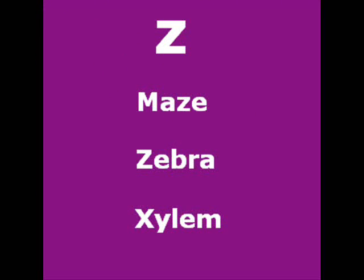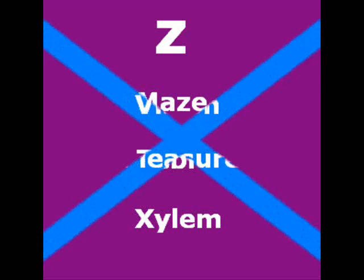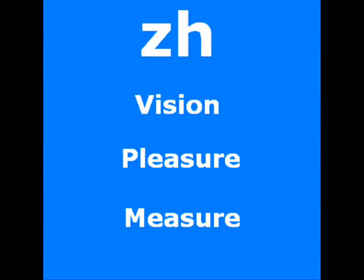This is also a problem. We often get confused between the usage of J and Z. J stands for the sound 'J' as in juice, and Z stands for the sound 'zer' as in maze, zebra, xylem, xylophone — it is always 'zer' and not 'x'. ZH, whenever you see it in a dictionary pronunciation, produces the sound 'zh' as in vision, pleasure, measure. Most of the time we mispronounce these as 'vi-sion', 'plea-sure', 'mea-sure', which is actually wrong.